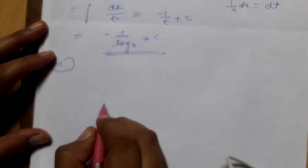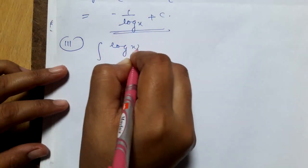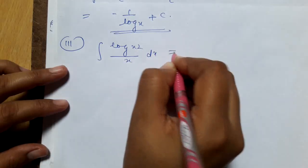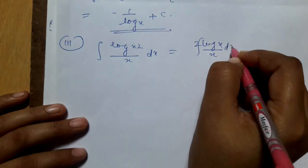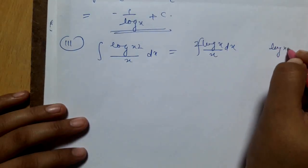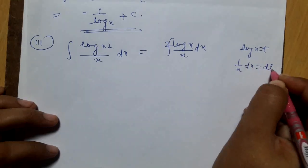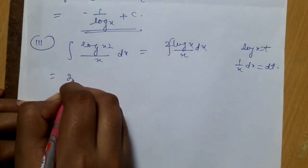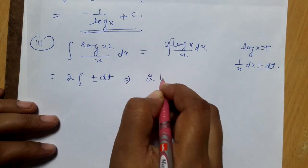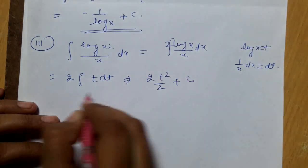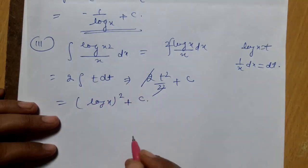Part 3: integration of (log x)² / x dx. This can be rewritten as ∫2 log x / x dx. Put log x = t, so 1/x dx = dt. The integral becomes 2∫t dt = 2 · t²/2 + c; the 2 cancels, giving (log x)² + c.